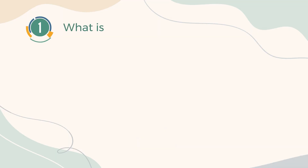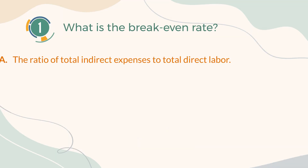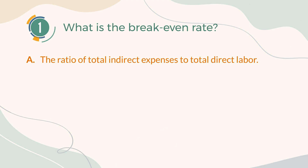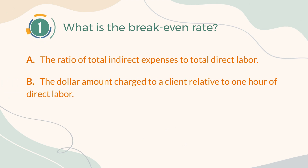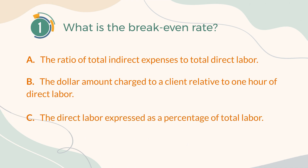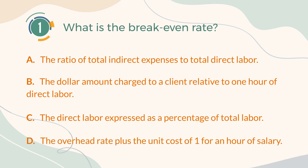Number 1. What is the break-even rate? A. The ratio of total indirect expenses to total direct labor. B. The dollar amount charged to a client relative to one hour of direct labor. C. The direct labor expressed as a percentage of total labor. D. The overhead rate plus the unit cost of one for an hour of salary.